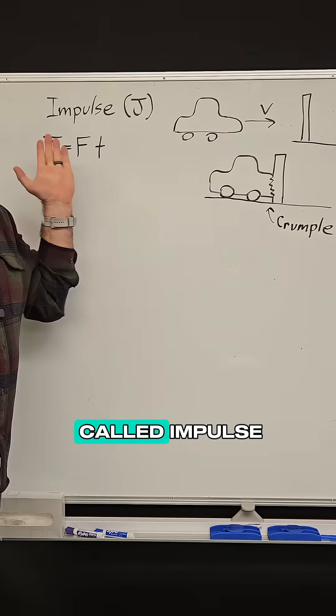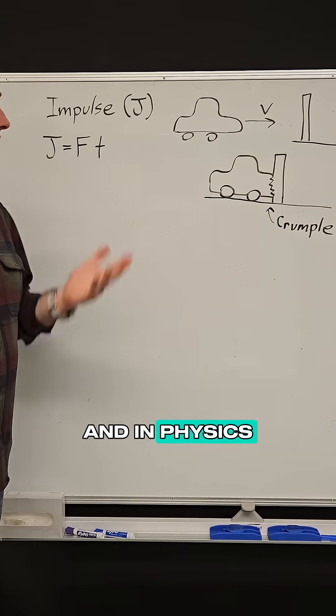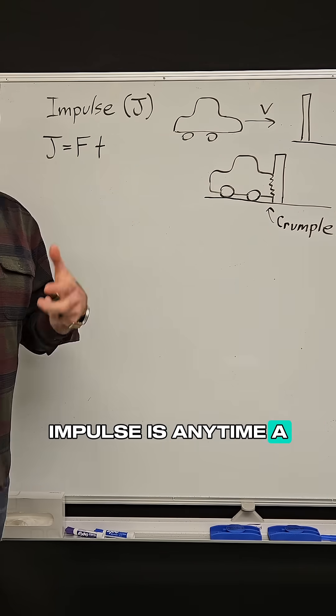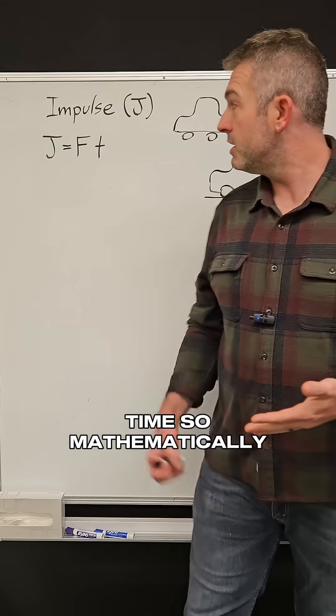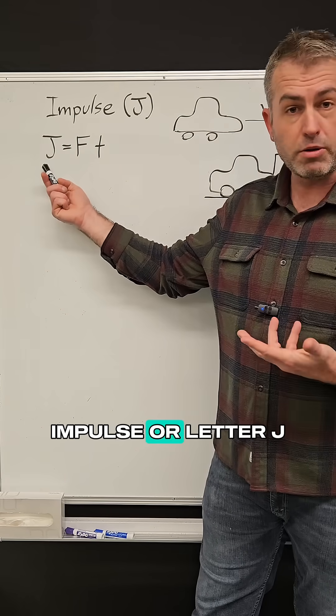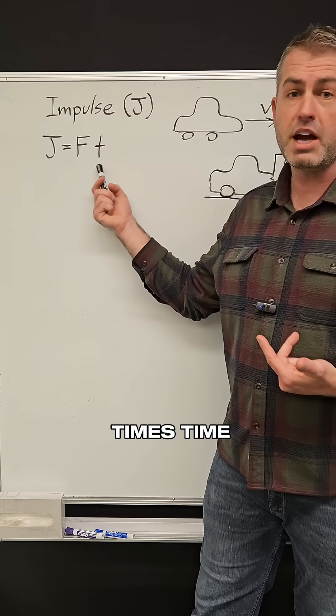Well, it has to do with this idea called impulse. In physics, impulse is any time a force is applied to some object for some amount of time. So mathematically, impulse, or letter J, is equal to force times time.